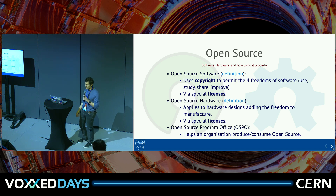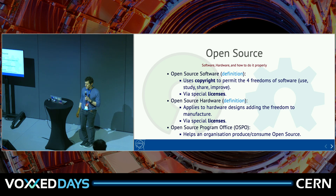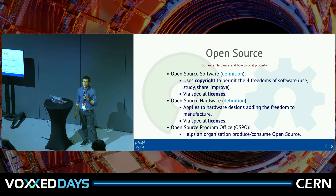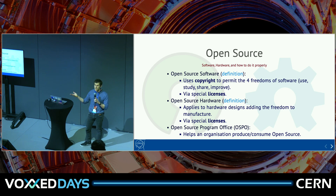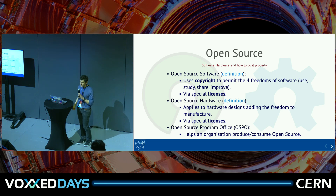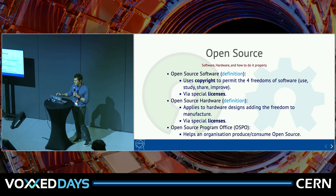Those two concepts — copyright and license — are very important. At CERN we started an Open Source Program Office, which is a body that helps an organization produce and consume open source correctly, to mitigate legal risks and to make sure that software is properly licensed and reusable, because it's all about contributing it outside.